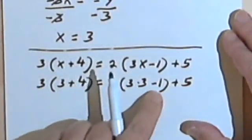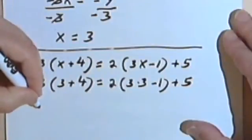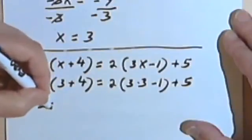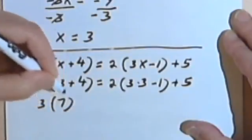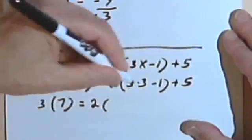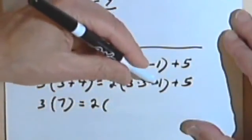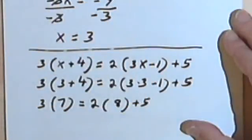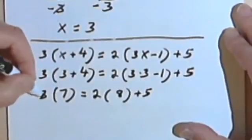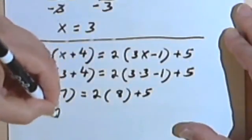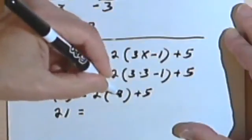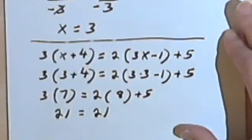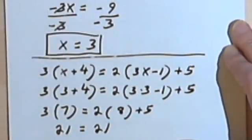I'll simplify what's inside my parenthesis first. So 3 times 3 plus 4 is 7, I guess I'll keep the parenthesis, equals 2 times 3 times 3 is 9, minus 1, 9 minus 1 is 8, plus 5. Multiplying out on the left, I've got 3 times 7 is 21. On the right I've got 2 times 8 is 16, plus 5 is also 21. So my answer checks.